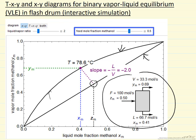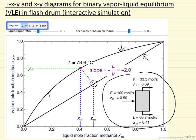It also allows you to change the z value of the feed, and it shows the behavior on both the y-x or x-y diagram and on a t-x-y diagram. There's an option to see both of them smaller next to each other, so you can get a direct comparison. Let's look at the interactive simulation to understand what's being demonstrated for a flash drum.